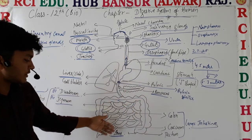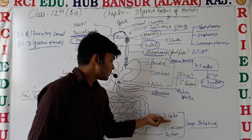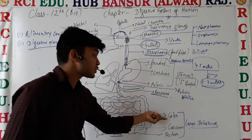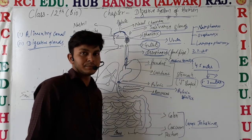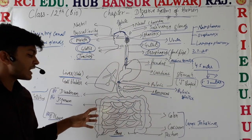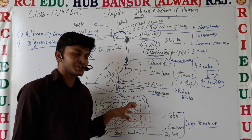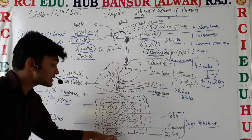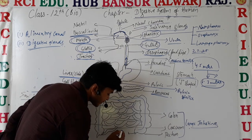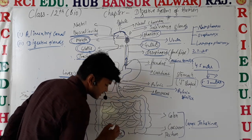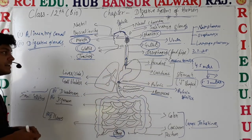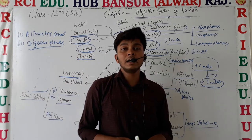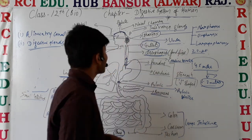The large intestine is further divided into three parts: number one is the caecum, number two is the colon, and number three is the rectum. The rectum is a sac-like structure where waste is stored, and at the end there is a sphincter called the anus, through which waste exits the body.